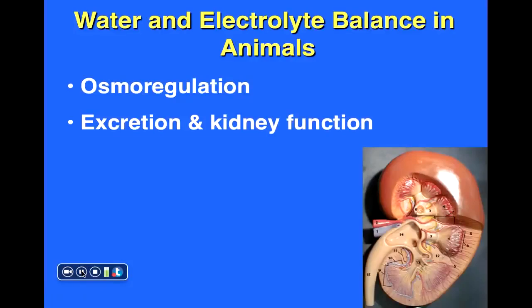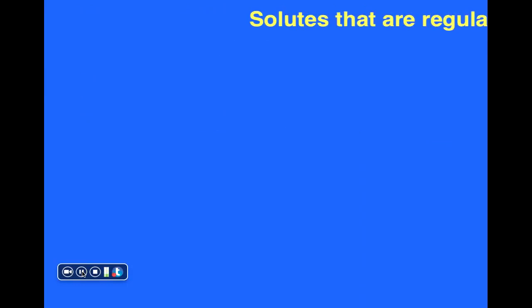We will now discuss some concepts related to water and electrolyte balance in animals, focusing on our kidneys and the role they play during osmoregulation as they're involved in the formation of urine within our bodies.